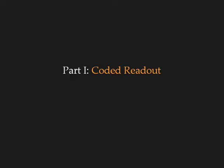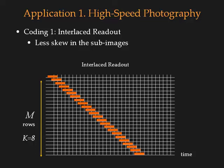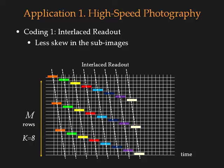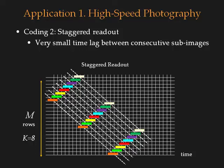In the first part, we show how to use coded readout to better sample the time dimension. Our first application is high-speed photography, where we simply trade off the vertical image resolution for higher frame rate. We propose two coding schemes. For interlaced readout coding, the readout time for one frame is uniformly divided into K sub-images. These sub-images have less skew than conventional rolling shutter. For staggered readout coding, we reverse the order of readout within every K rows. The skew in these K sub-images remains the same, but the time lag between two consecutive sub-images is very small. This is useful for ultra-high-speed photography.